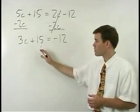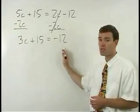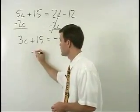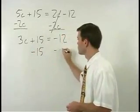Now we want to put our numbers together on the right side of the equation and we do that by subtracting 15 from both sides.